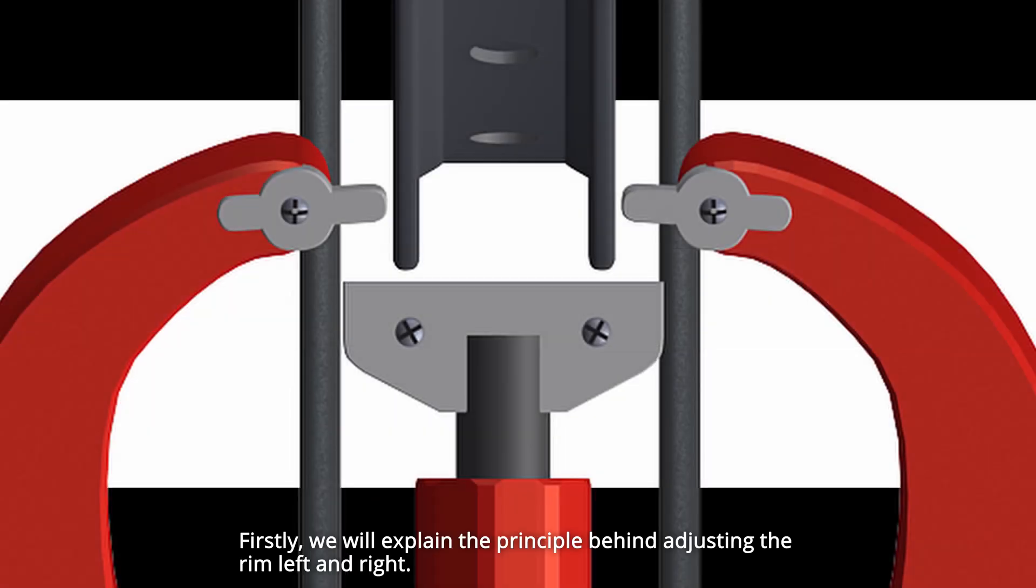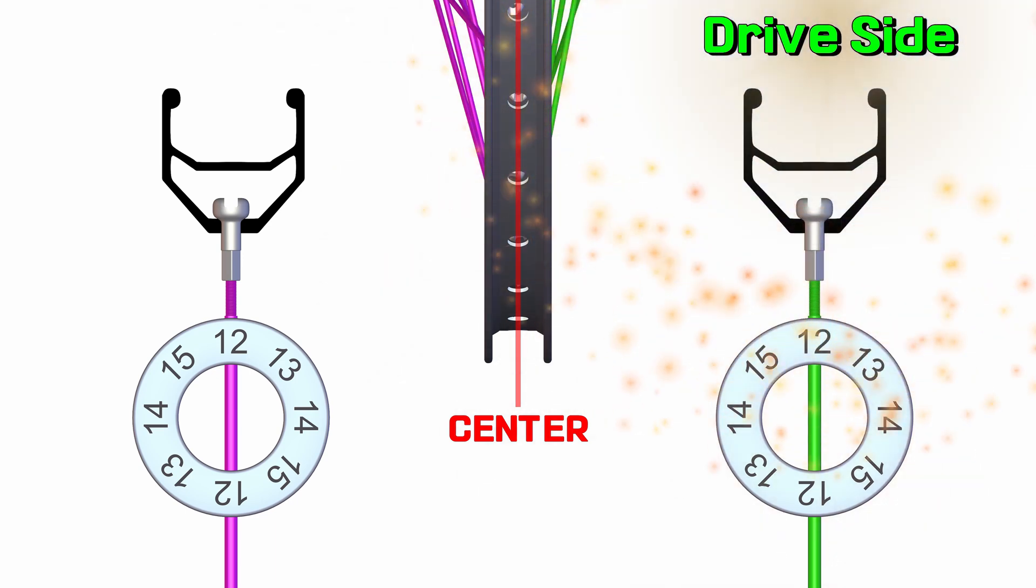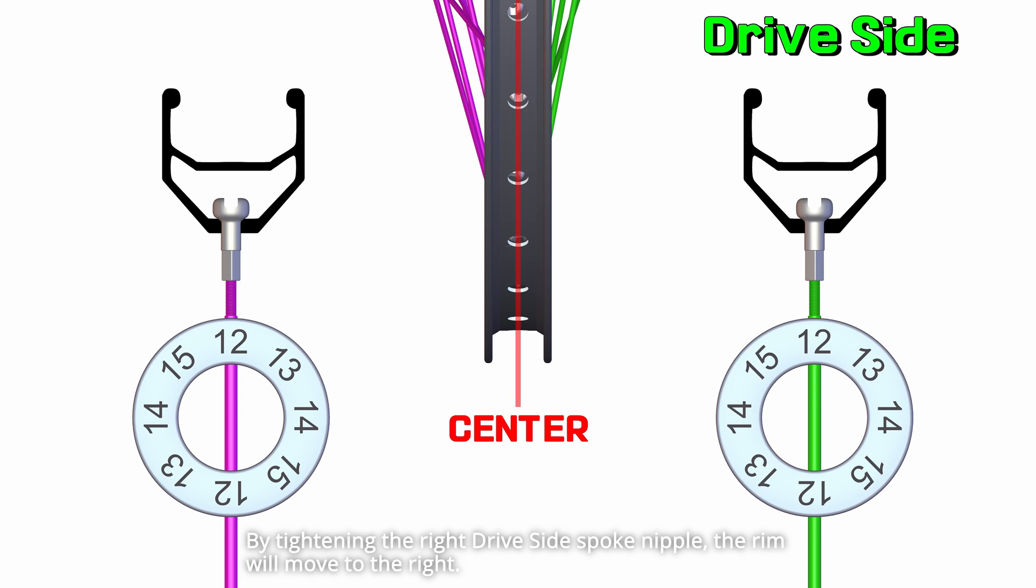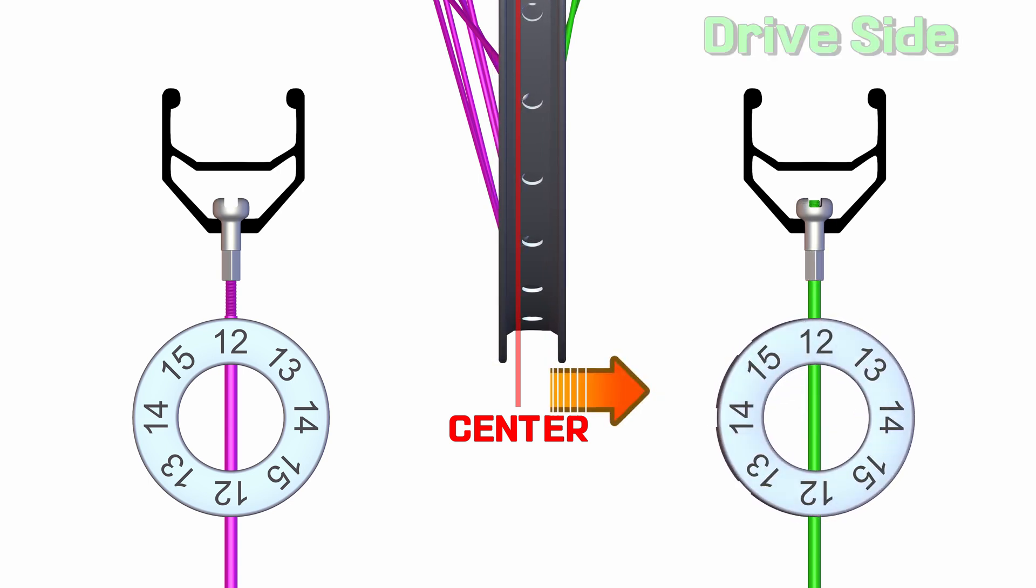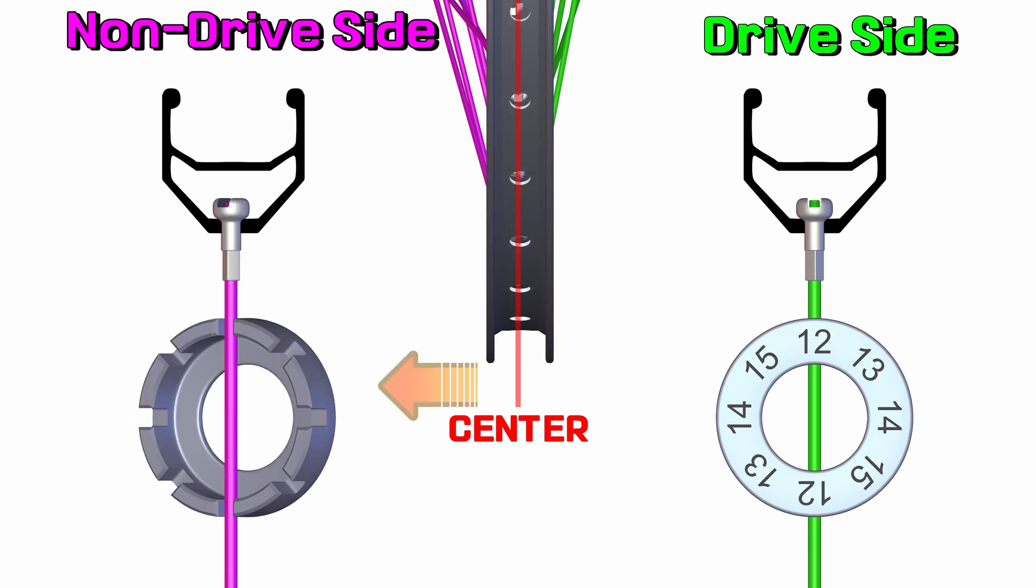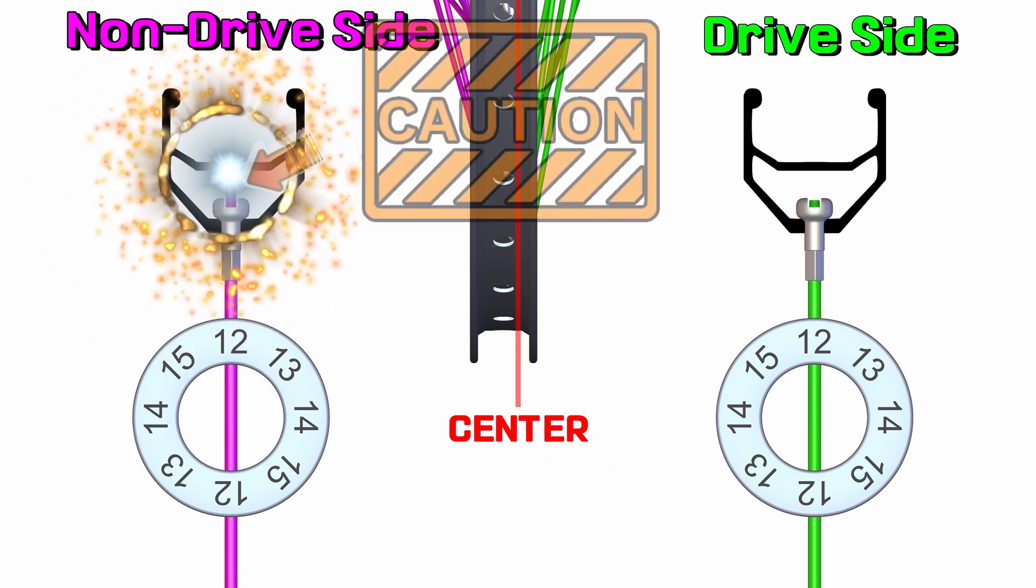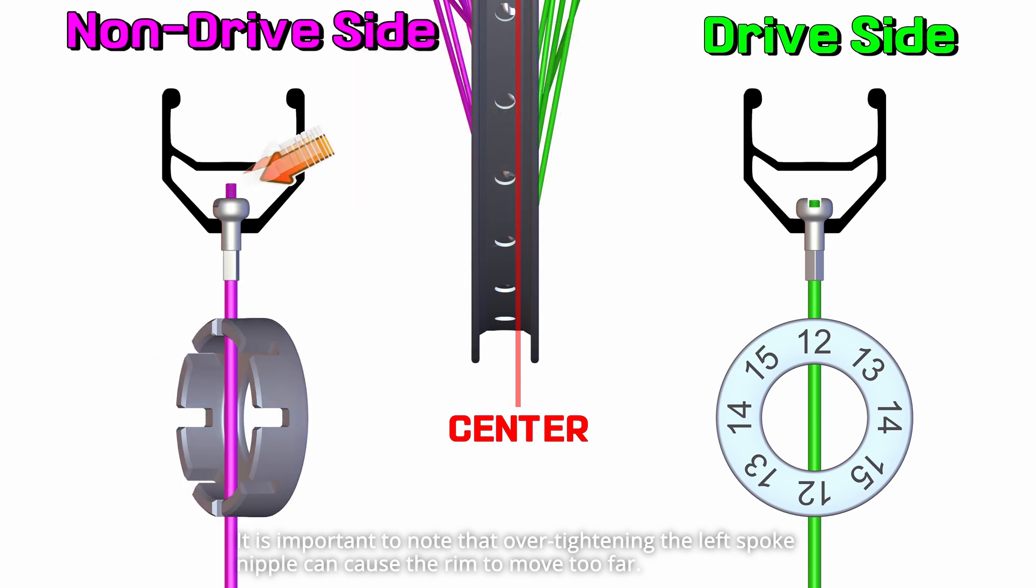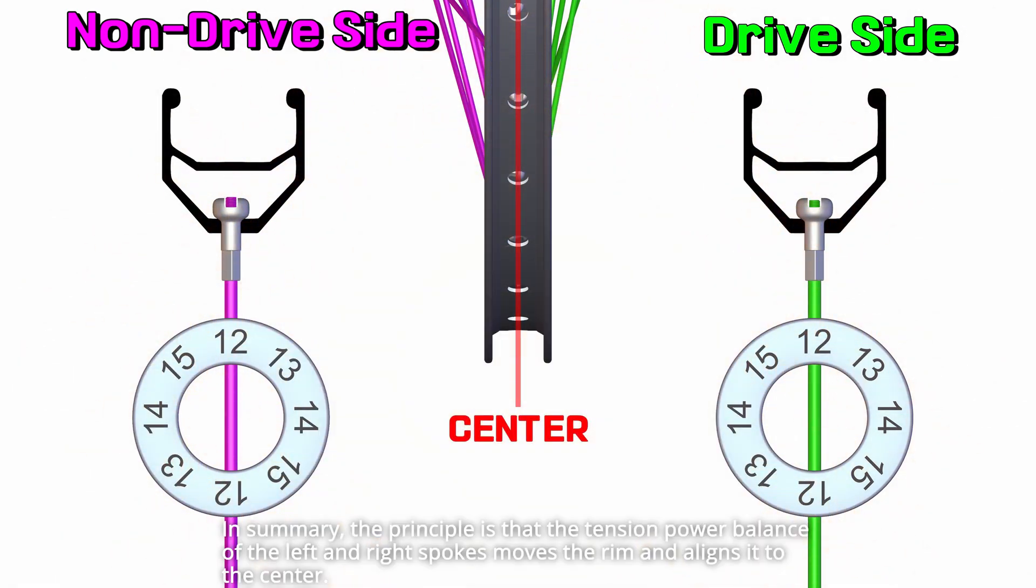Firstly, we will explain the principle behind adjusting the rim left and right. By tightening the right drive-side spoke nipple, the rim will move to the right. Conversely, tightening the left non-drive side spoke nipple will move the rim to the left. It is important to note that over tightening the left spoke nipple can cause the rim to move too far. Releasing the nipple will cause the rim to move in the opposite direction. In summary, the principle is that the tension power balance of the left and right spokes moves the rim and aligns it to the center.